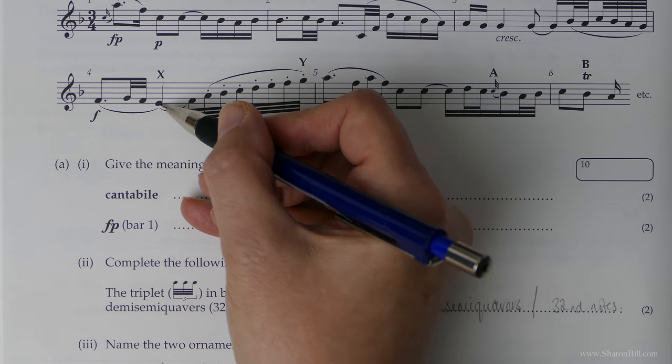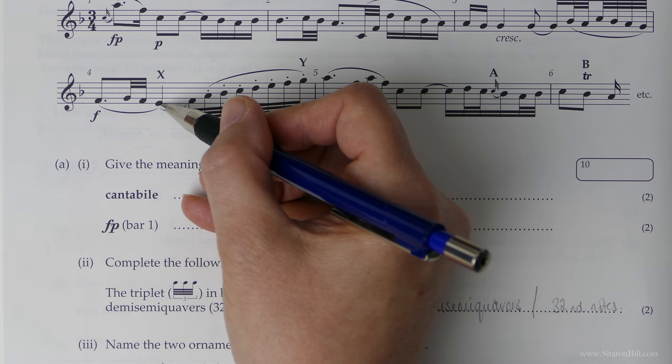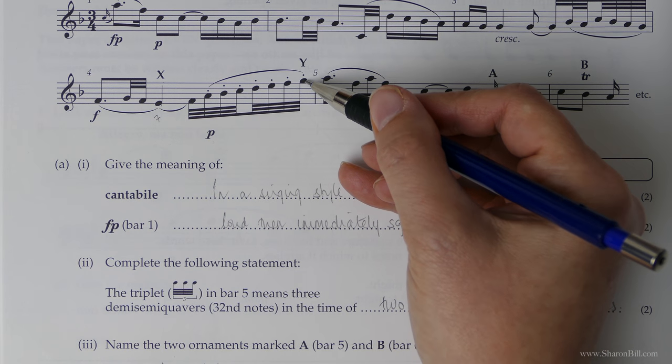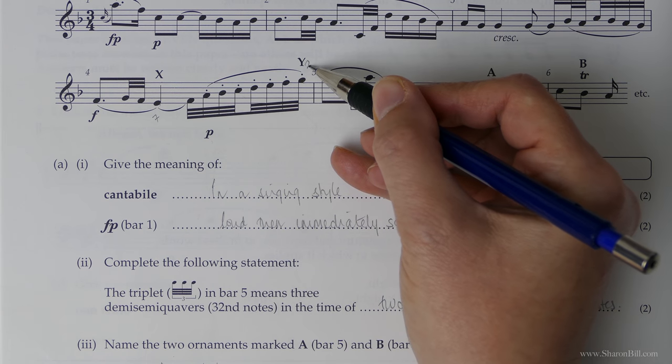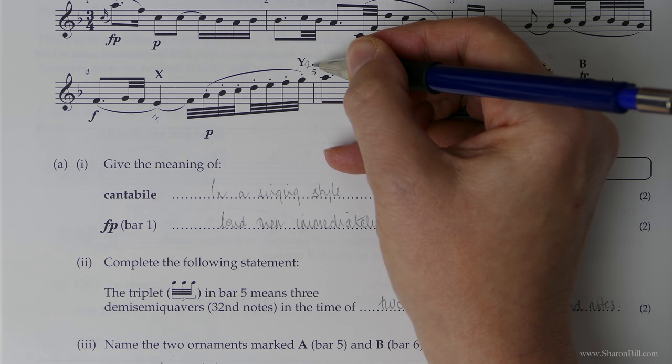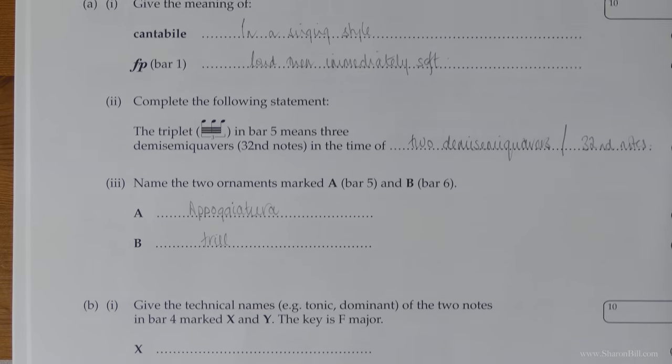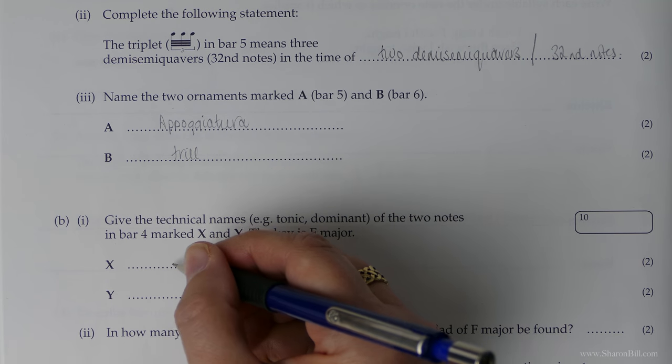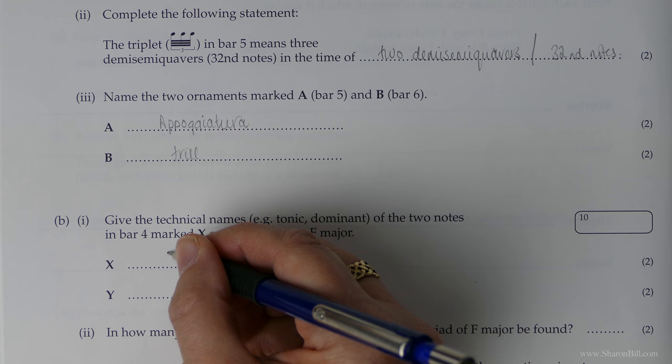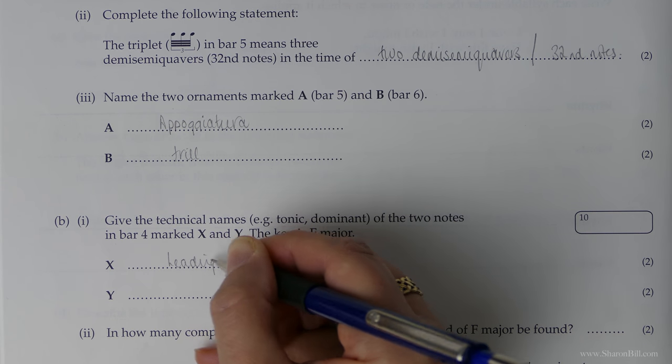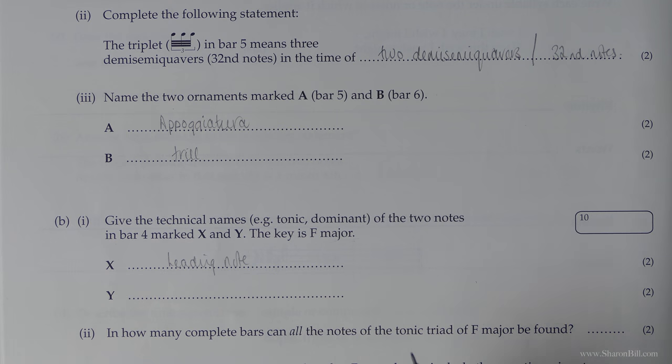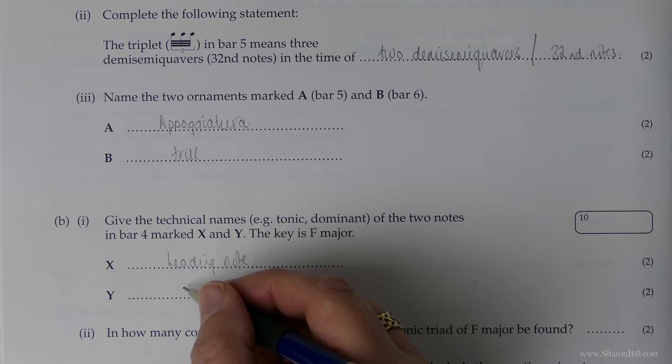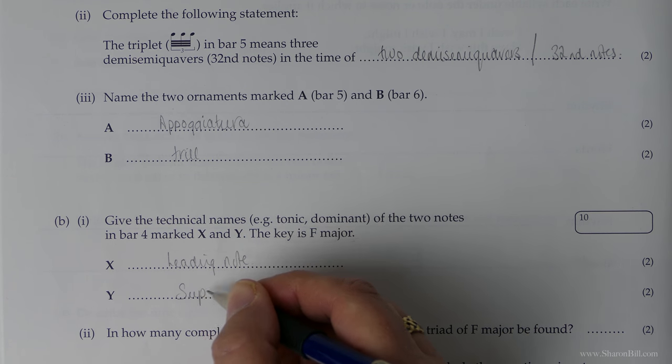And then give them the technical name. So this is an E. So if you count backwards, 8, 7, we know that that's the leading note. 7 is the leading note. And then this next one is G. So if we count from F, 1, 2, that's the second. And so that would be the supertonic. Super meaning above the tonic. So the E is the leading note. Because it leads to the tonic. It always rises to the tonic in harmony. And then the second one is a second which is a supertonic. Because it's above the tonic.